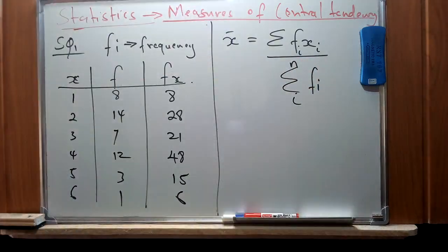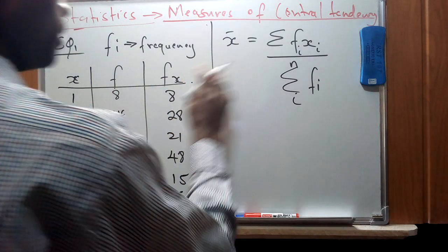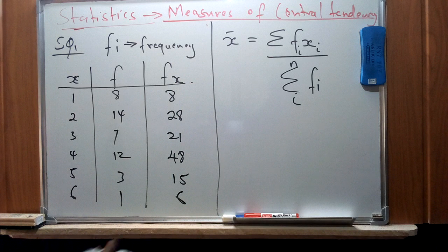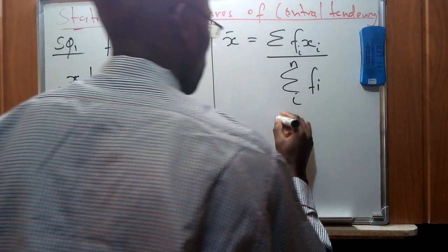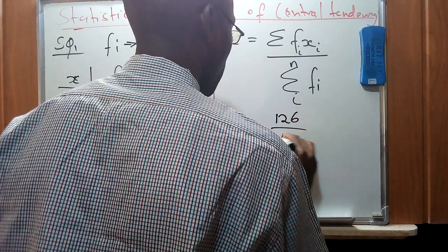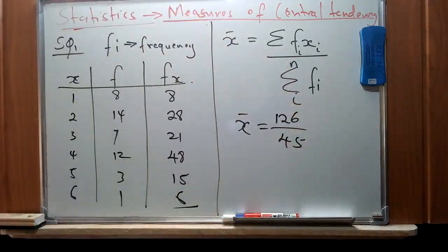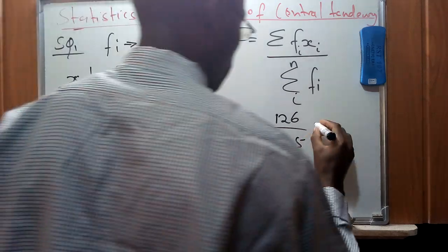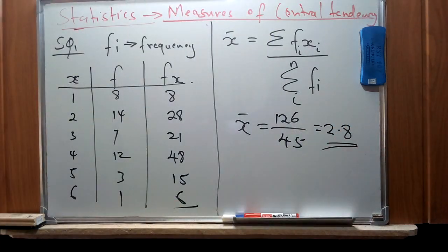Finding the summation of the fx column gives us 126, and the total frequency gives us 45. Therefore 126 divided by 45 gives us 2.8. So 2.8 is our mean from this set of values organized in tabular form.